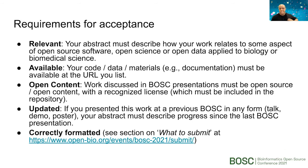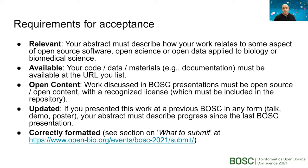Now to the details, because these are things that reviewers are going to be looking for when they critique your abstract and decide whether it's appropriate and whether it's going to be a poster or a talk. First: relevance. It's got to have some connection to open source software, open science, open data in the bio space. It's got to be available — in most cases there's going to be a repository or URL where your code or data materials are accessible. It's got to be open, so we talked about that licensing aspect.